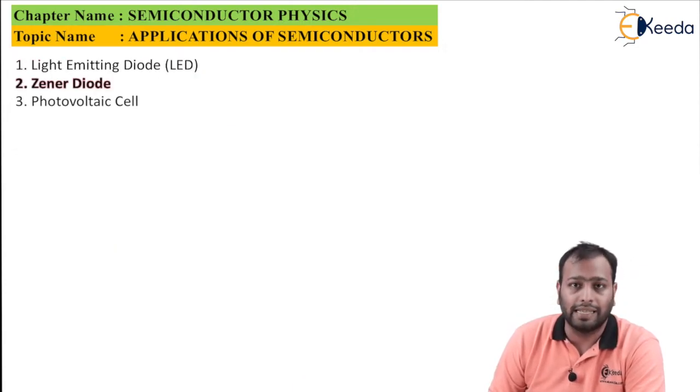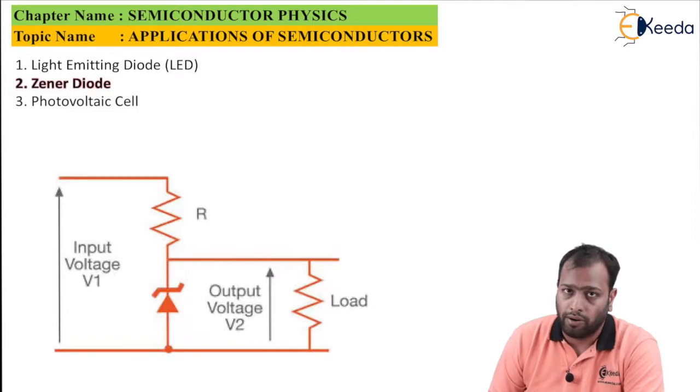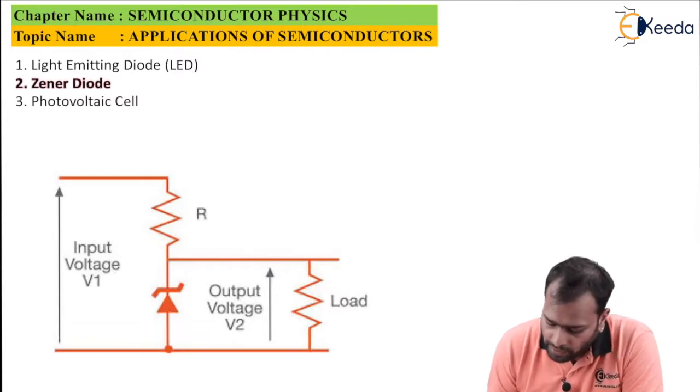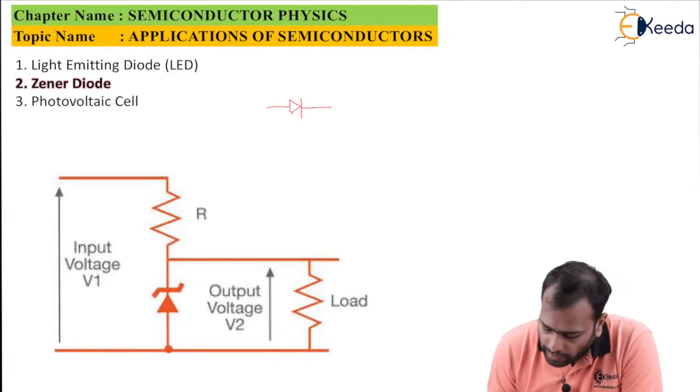Now the second application is zener diode. Zener diode again is same as a regular diode but it is always used in reverse biased mode. A normal diode is indicated with this symbol whereas zener diode has a symbol something similar to this.